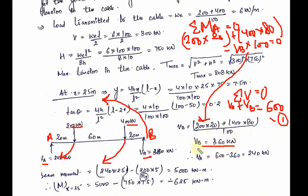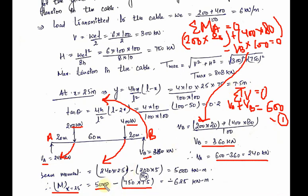Substituting Vb = 360 into equation 1, Va comes out to be 240 kilonewtons. Now we find the bending moment at x = 25 meters. The formula is: bending moment = beam moment − H·y. We already know H = 750 kilonewtons and y = 7.5 meters. We just need the beam moment.